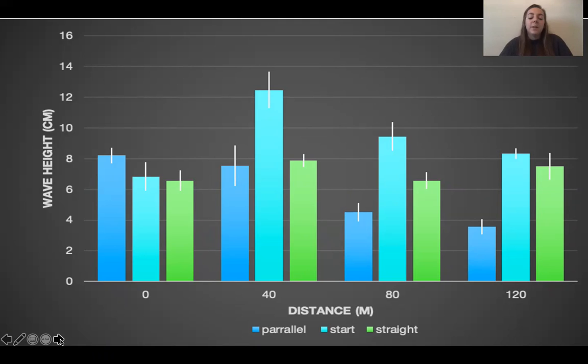At the 80 meter distance you can see that the parallel had almost a 50 percent reduction in its wave height. The starting was still at the top and had the greatest wave height. The straight was continuous and comparable to all of the other distances of the same treatment.